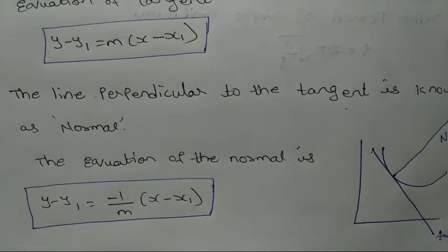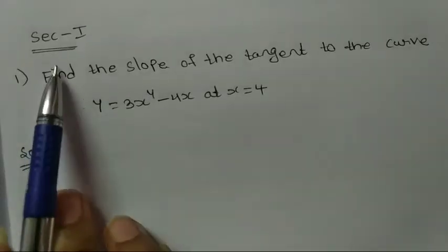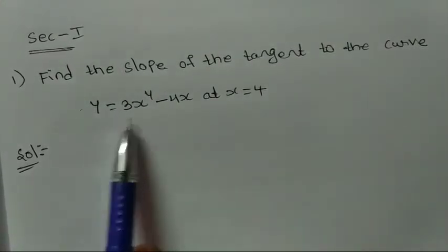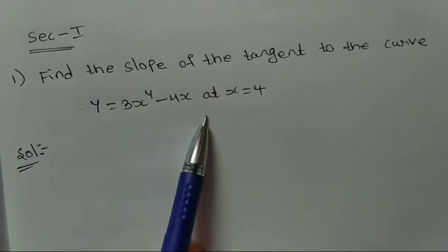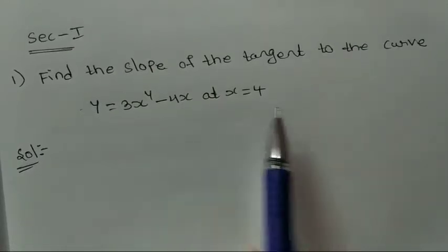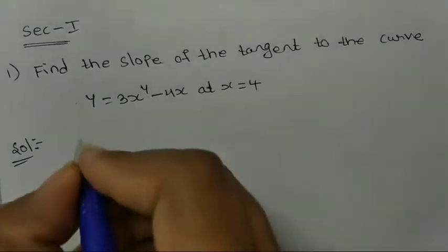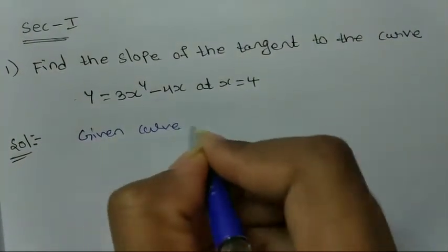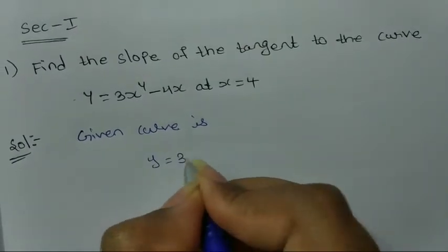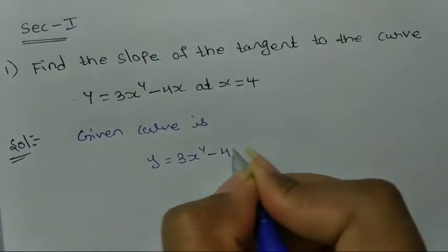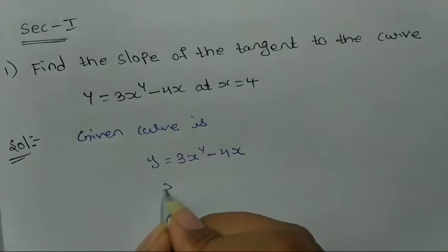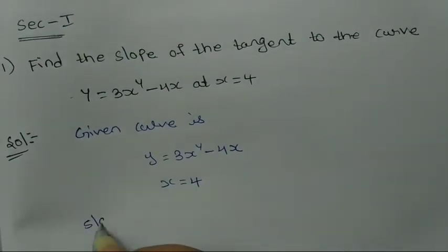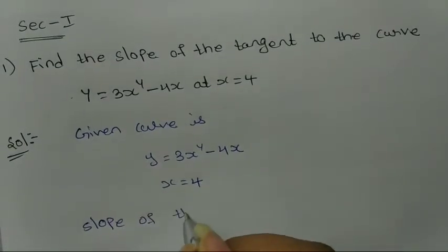Section 1, first question: Find the slope of the tangent to the curve y = 3x⁴ − 4x at x = 4. Solution: given curve is y = 3x⁴ − 4x at x = 4. Now, slope of the tangent m = dy/dx at x = 4.